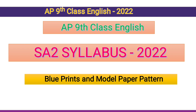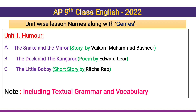AP 9th class English SA2 syllabus 2022 — blueprints and model paper pattern, unit-wise lesson names along with the genre. To write the reading comprehension questions accurately, you must know the writer's name and what kind of lesson it is, which is called genre. Let's get into the first unit: Unit 1 — Humor and Reading.